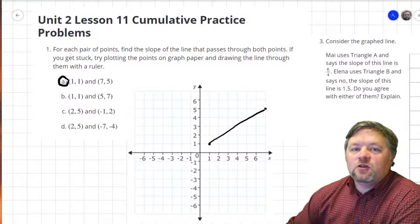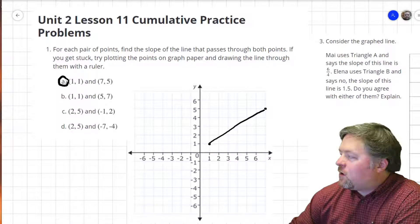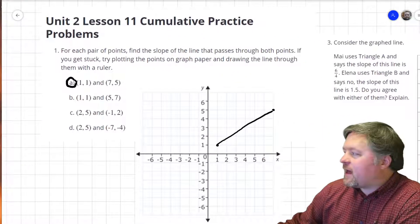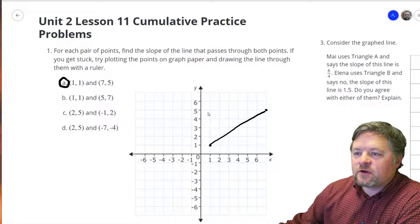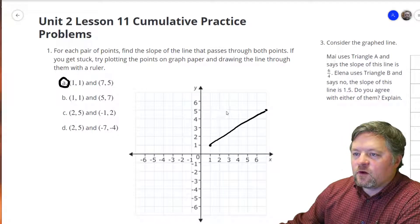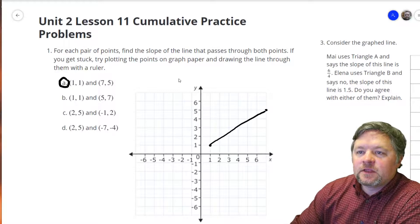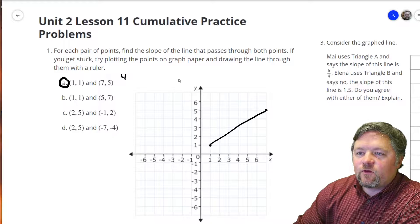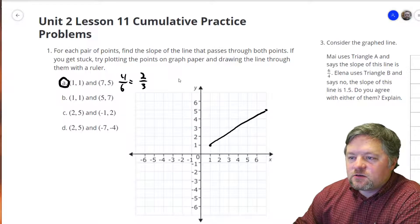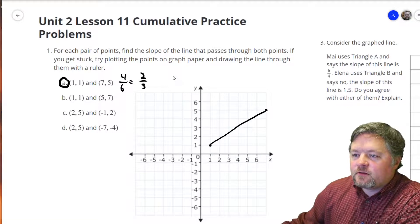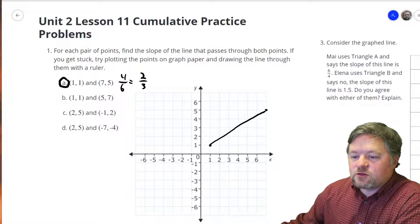Slope is rise over run. Then we go up 1, 2, 3, 4, and we go over 1, 2, 3, 4, 5, 6. So our slope is 4 over 6, which is 2 thirds. Look, we also go up 1, 2, 1 over 1, 2, 3. So slope of 2 thirds.